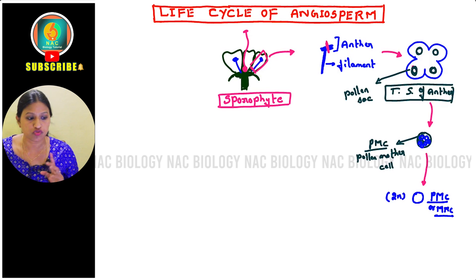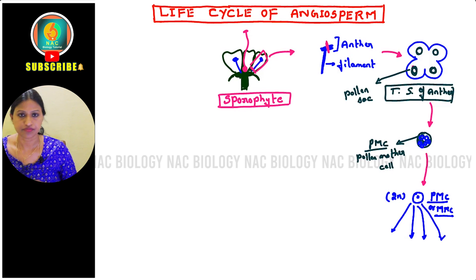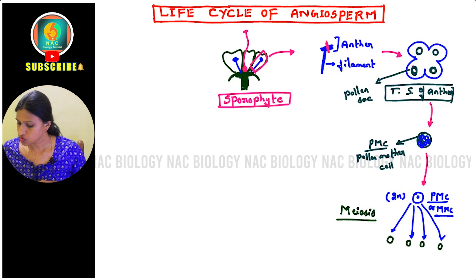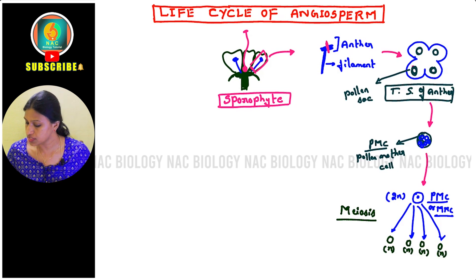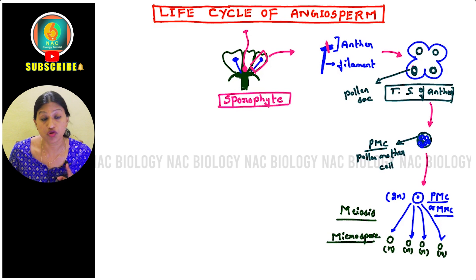When the pollen mother cell (2n) undergoes meiosis, it gives rise to four cells. All these cells are n (haploid) in number — half the chromosome number of the diploid — so all four microspores are haploid. Finally, each microspore undergoes mitosis and starts converting into a pollen grain.